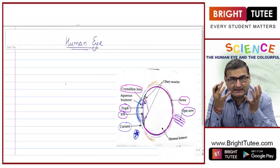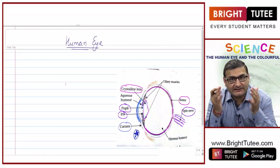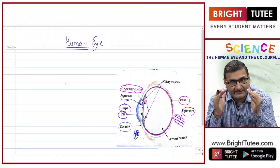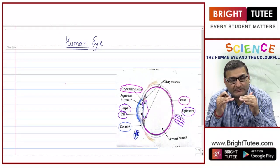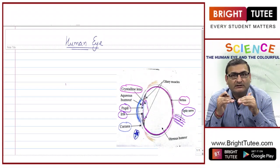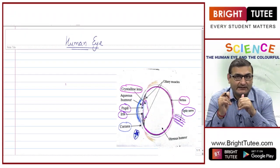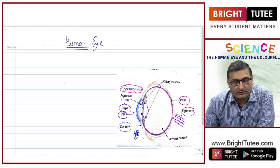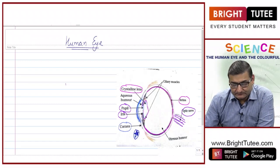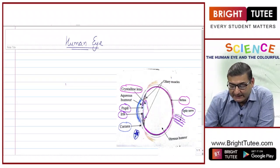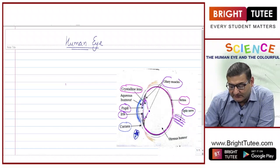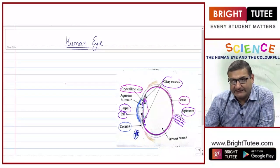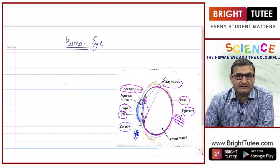We just feel a flash in our eyes, and after some time the iris will readjust itself to control or decrease the pupil size so as to allow the normal required amount of light. This is how iris and pupil work together. Next, ciliary muscles are the muscles which hold the lens.